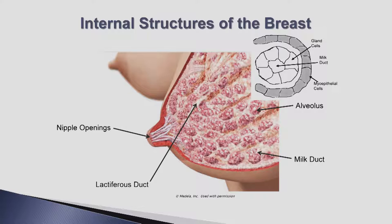Glandular tissue can extend beyond the breast up towards the armpit, called the tail of Spence. While lactating women may experience fullness and tenderness in this area, this is not of concern and is rather a reflection of glandular tissue in that area.